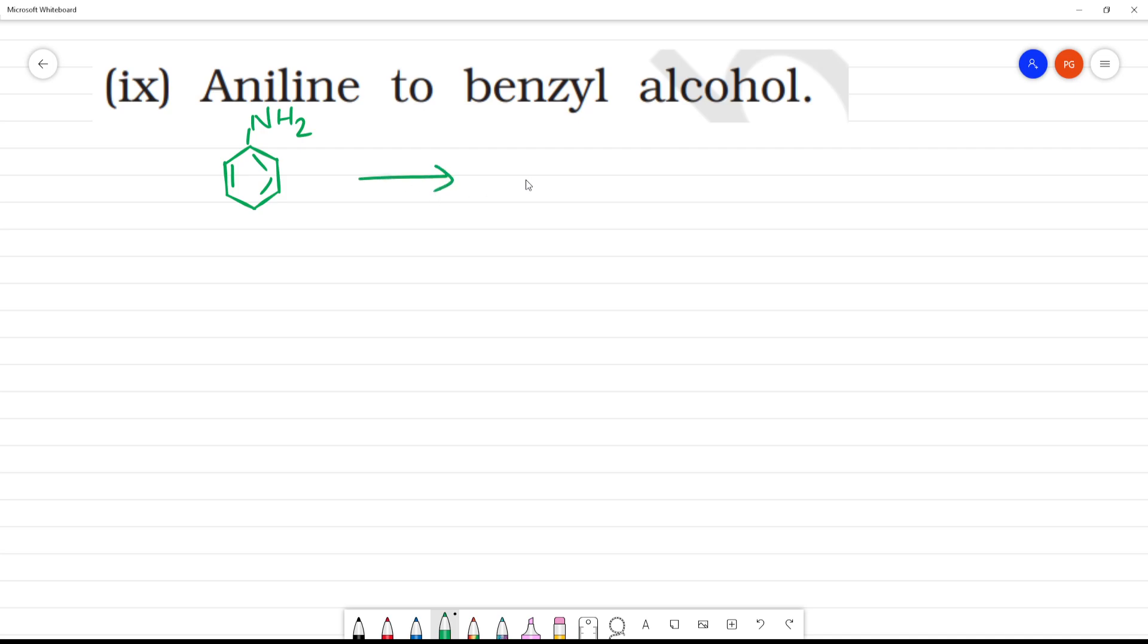So what is benzyl alcohol? C6H5CH2OH. We can draw the benzene structure.